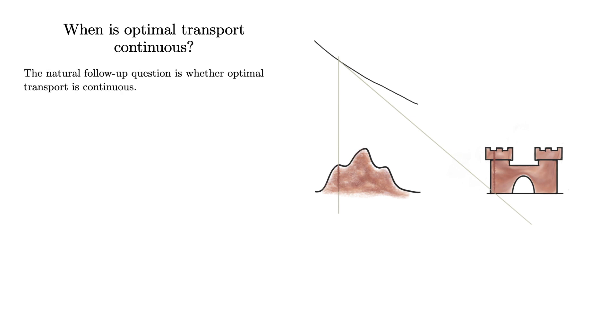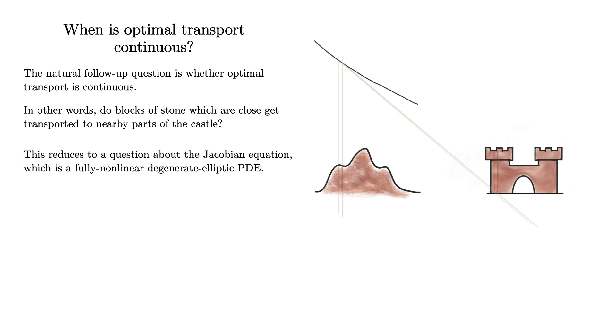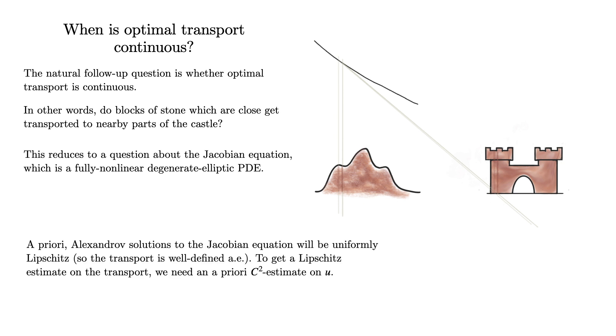Now that the question of existence for the Monge problem has been settled, the natural follow-up question is whether the solution is somehow continuous. In other words, do blocks of stone which are close together in the pile get transported to nearby parts of the castle? Using the previous result, we can solve this question by analyzing the Jacobian equation, which is a fully non-linear degenerate elliptic partial differential equation. In particular, we can solve this question by finding a priori estimates for the solutions of the Jacobian equation. For this type of equation, the weak solutions will be uniformly Lipschitz, which implies that they are differentiable almost everywhere. However, in order to find a Lipschitz estimate on the transport, what we need is an a priori C² estimate on the potential. To put that more concretely, we want to show that the potential cannot have corners.